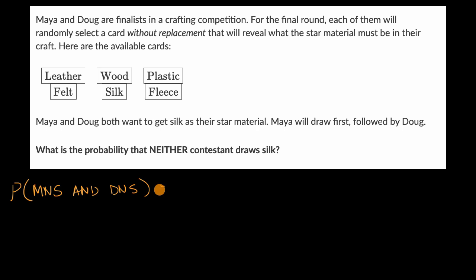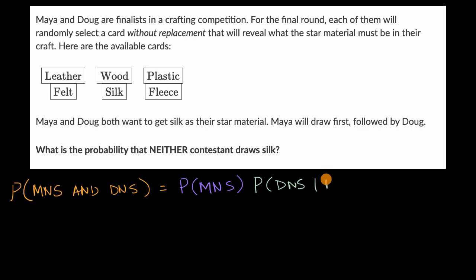This is going to be equivalent to the probability that Maya does not get silk, times the probability that Doug doesn't get silk, given that Maya did not get silk. So the probability that Maya gets no silk: she picks first, there are six options, and five of them are not silk. So it is five over six.